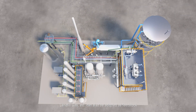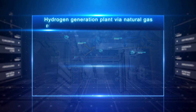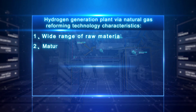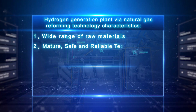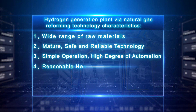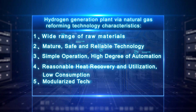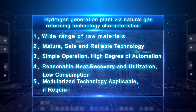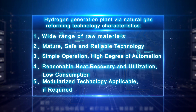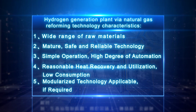Key technology characteristics of the hydrogen generation plant via natural gas reforming include: wide range of applicable raw materials, mature and reliable technology, simple operation, high degree of automation, reasonable heat recovery and utilization, low consumption, and modularized technology applicable as required.